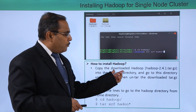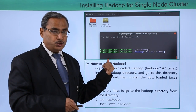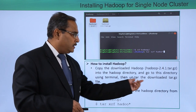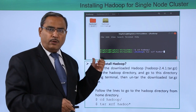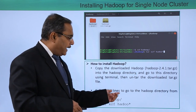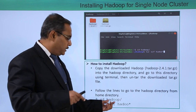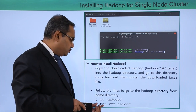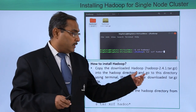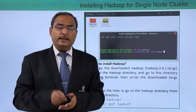Now copy the downloaded file 'hadoop-2.4.1.tar.gz' from the downloads folder into the Hadoop directory. Then go to that directory using the terminal and untar the downloaded tar.gz file by executing 'tar xzf hadoop-2.4.1.tar.gz'. The files will be extracted here and this completes the single node cluster installation of Hadoop. Thanks for watching this video.